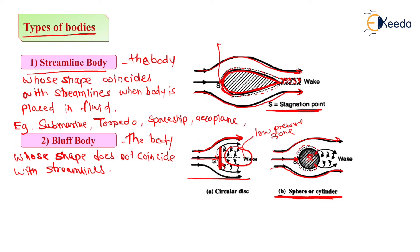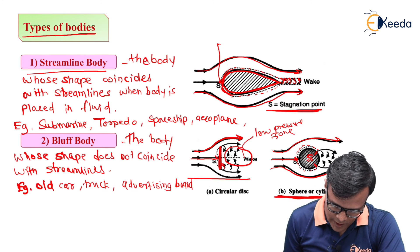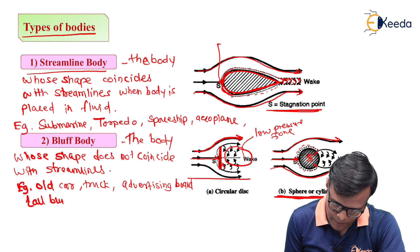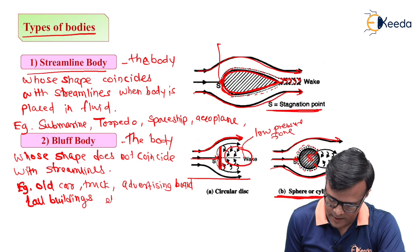So bluff body can be old car, truck, advertising board. These are nothing but the perfectly flat surfaces exposed to the air velocities, tall buildings, etc.